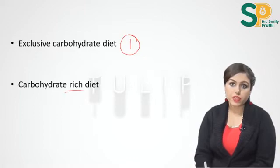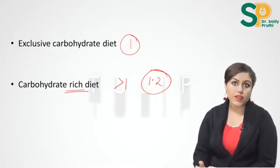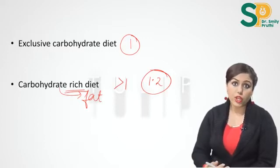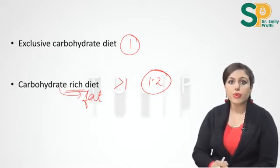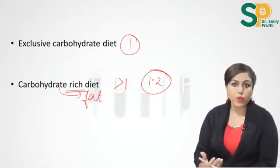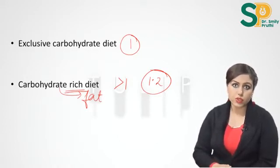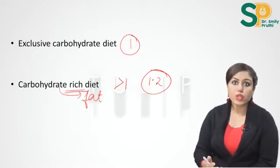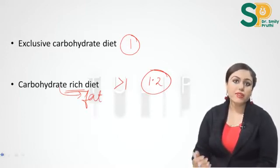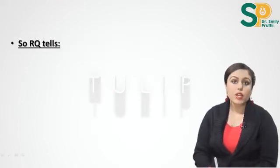In case of an exclusive carbohydrate diet, RQ will be 1, but in case of a carbohydrate-rich diet RQ is more than 1, around 1.2. This occurs because extra carbohydrates are converted to fat in the body. Carbohydrate, a macromolecule with more oxygen, is converted to fat which has less oxygen, so some oxygen is released and can be used for oxidation — meaning less oxygen is needed from external sources, so RQ increases above 1.